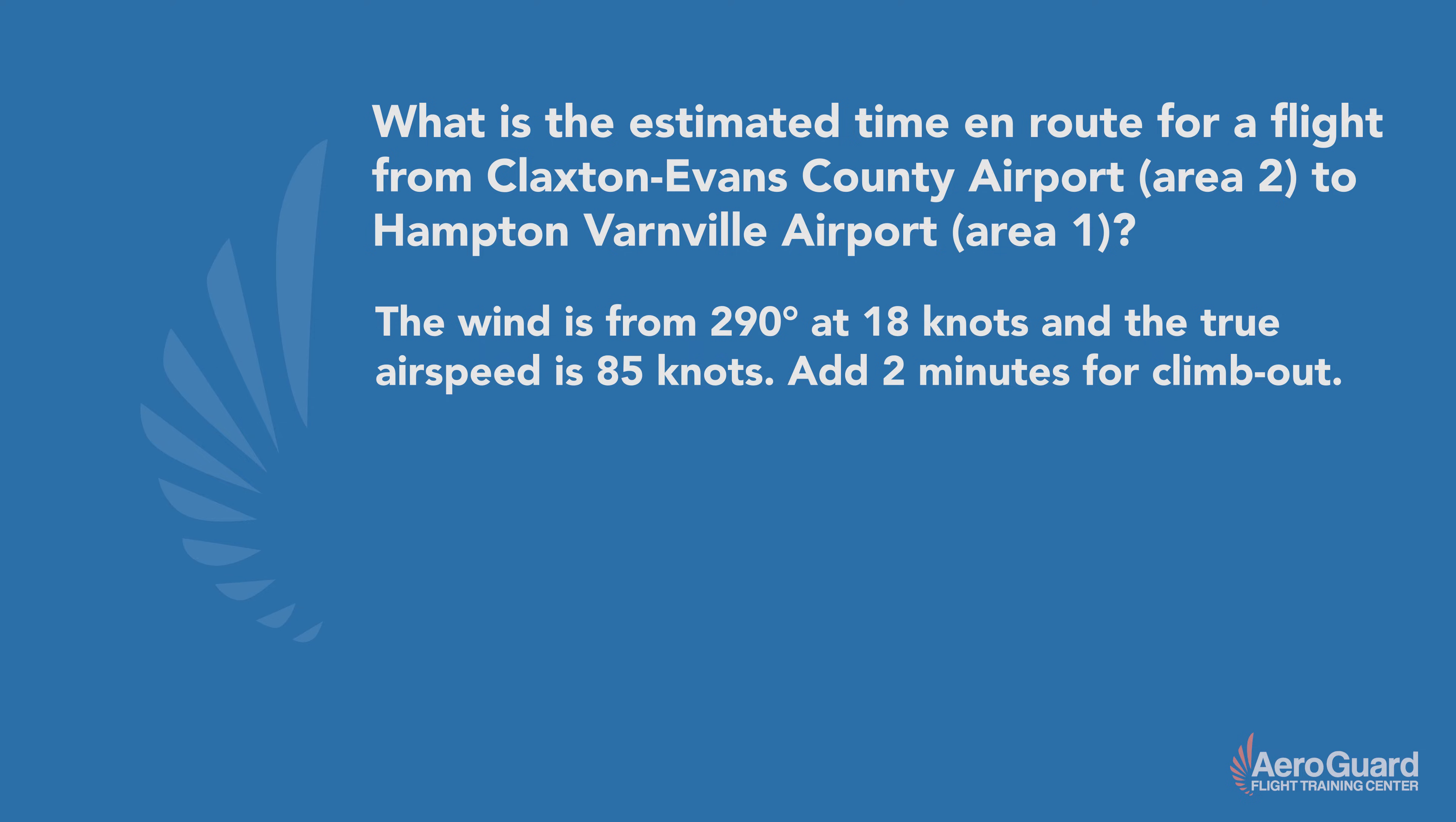The question reads: what is the estimated time in route for a flight from Claxton Evans County Airport in Area 2 to Hampton Varnville Airport in Area 1? The wind is from 290 degrees at 18 knots and the true airspeed is 85 knots. It also gives us an additional reminder that we need to add two minutes for climb out.